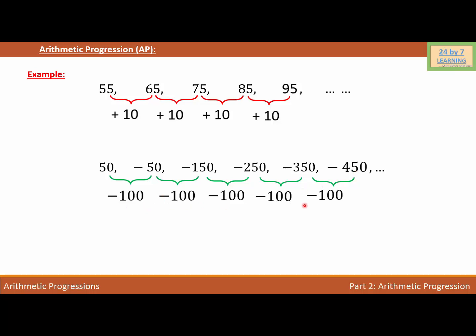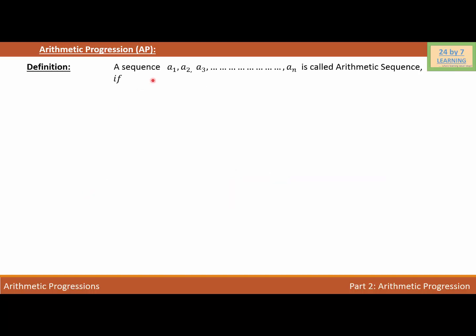If you look at this sequence, the difference between any two consecutive numbers is negative 100. If we create any sequence where the difference between any two consecutive numbers is the same throughout the sequence, then that type of sequence is called an arithmetic sequence. Mathematically, a sequence a1, a2, a3, ..., an is called an arithmetic sequence if aₙ = aₙ₋₁ + d, where aₙ is the nth term and d is the common difference — the same common difference of 10 in the first sequence and negative 100 in the second.